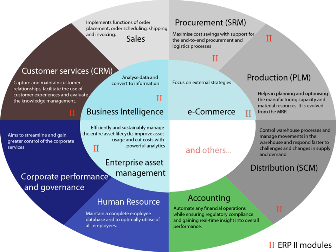Database integration: ERP systems connect to plant floor data sources through staging tables in a database. Plant floor systems deposit the necessary information into the database, and the ERP system reads the information in the table. The benefit of staging is that ERP vendors do not need to master the complexities of equipment integration—connectivity becomes the responsibility of the system's integrator. Enterprise Appliance Transaction Modules (EATM) communicate directly with plant floor equipment and with the ERP system via methods supported by the ERP system. EATM can employ a staging table, web services, or system-specific program interfaces.